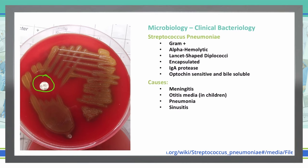So what does Streptococcus pneumoniae cause? It leads to meningitis, otitis media in children (which is a middle ear infection), pneumonia, and sinusitis.